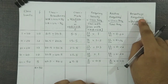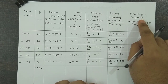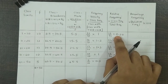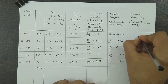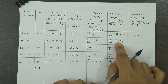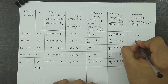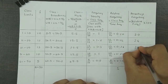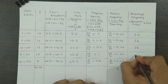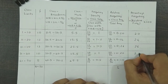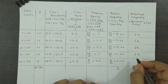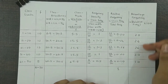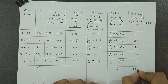Lastly we calculate percentage frequencies, which are simply the relative frequencies multiplied by 100. So: 0.20 × 100 = 20; 0.24 × 100 = 24; 0.26 × 100 = 26; 0.20 × 100 = 20; and 0.10 × 100 = 10. The sum of all percentage frequencies equals 100.